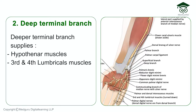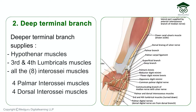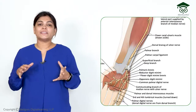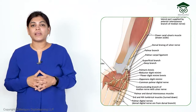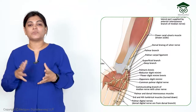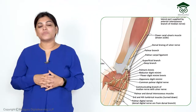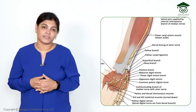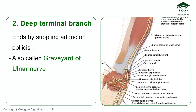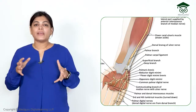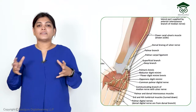The deep terminal branch of the ulnar nerve also supplies the third and fourth lumbrical muscles, and all eight interossei muscles — four palmar interossei and four dorsal interossei. The deep branch ends by supplying the adductor pollicis muscle. Because this is where the ulnar nerve terminates, the adductor pollicis is called the 'graveyard of the ulnar nerve.'